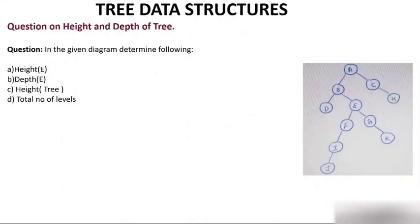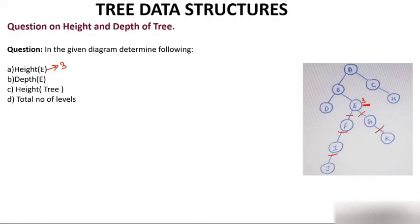Here is an example question: in the given diagram, determine the height of E. Height is calculated from that node to the most distant leaf. From E, you can reach leaf K with 2 edges, or leaf J with 3 edges — the maximum is 3, so height of E is 3. For depth of E: depth is always considered from root, and from root A to E takes 1 and 2 edges — so depth of E is 2.